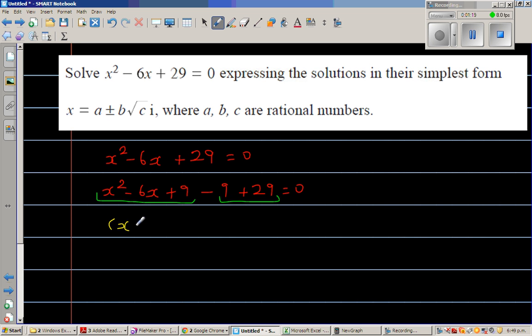The next step: this is (x - 3)² plus, what is this? 29 minus 9 is 20, equal to 0.